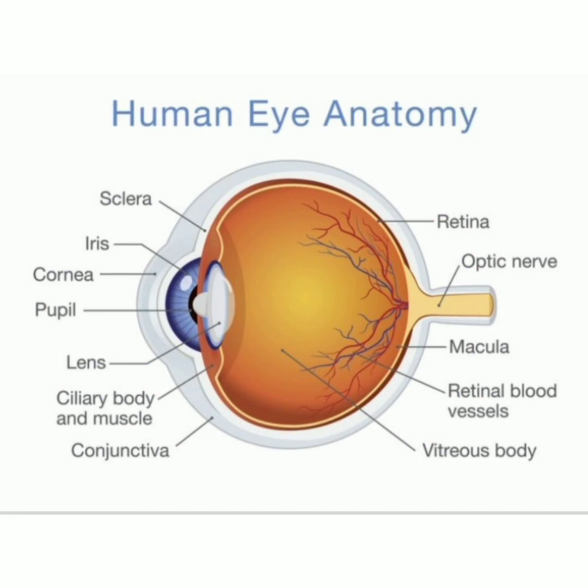Finally, the vitreous humor is a main part of the eye. A certain distance is required to focus light, and the vitreous humor is a transparent, watery gel situated in the eye. It supports the eye and allows for this focusing distance.